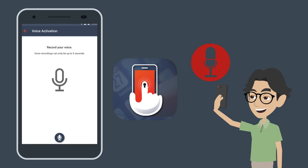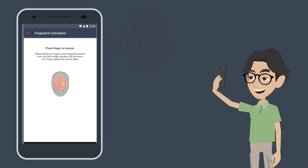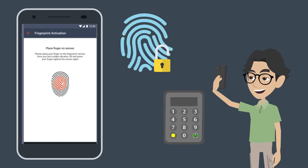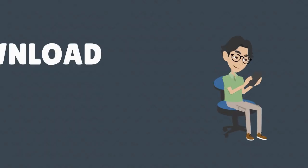Another exciting feature of the Dummy Mode app is that privacy mode can be launched using voice command. Once the user is done, the phone's owner can exit privacy mode by Touch ID or other buttons, depending on the phone's programming.